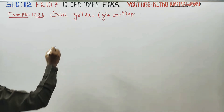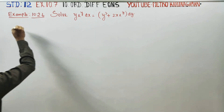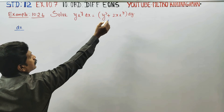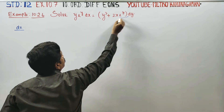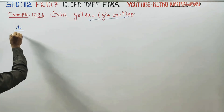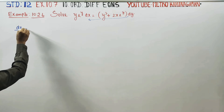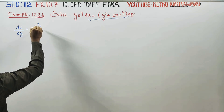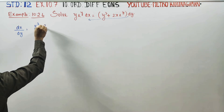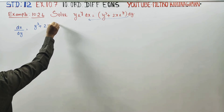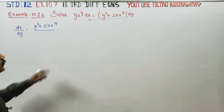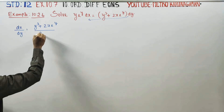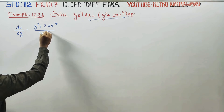Stage 1: rearrange to dx/dy form. dx/dy = (y³ + 2x·e^y) divided by y·e^y. Divide each term by y·e^y.